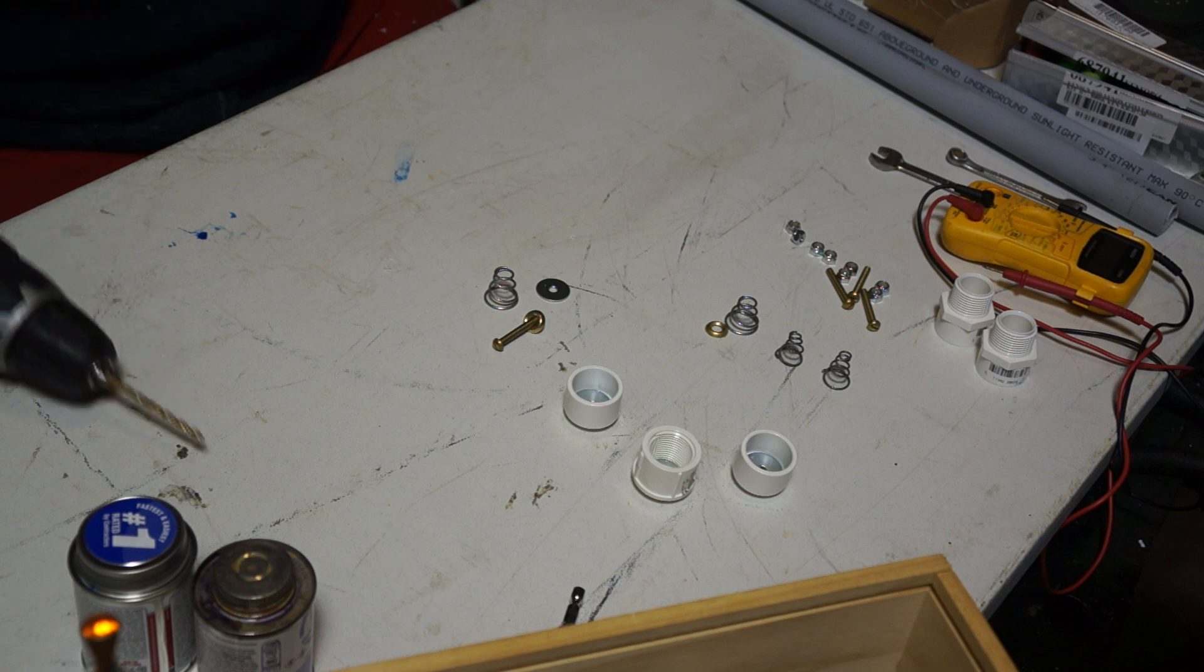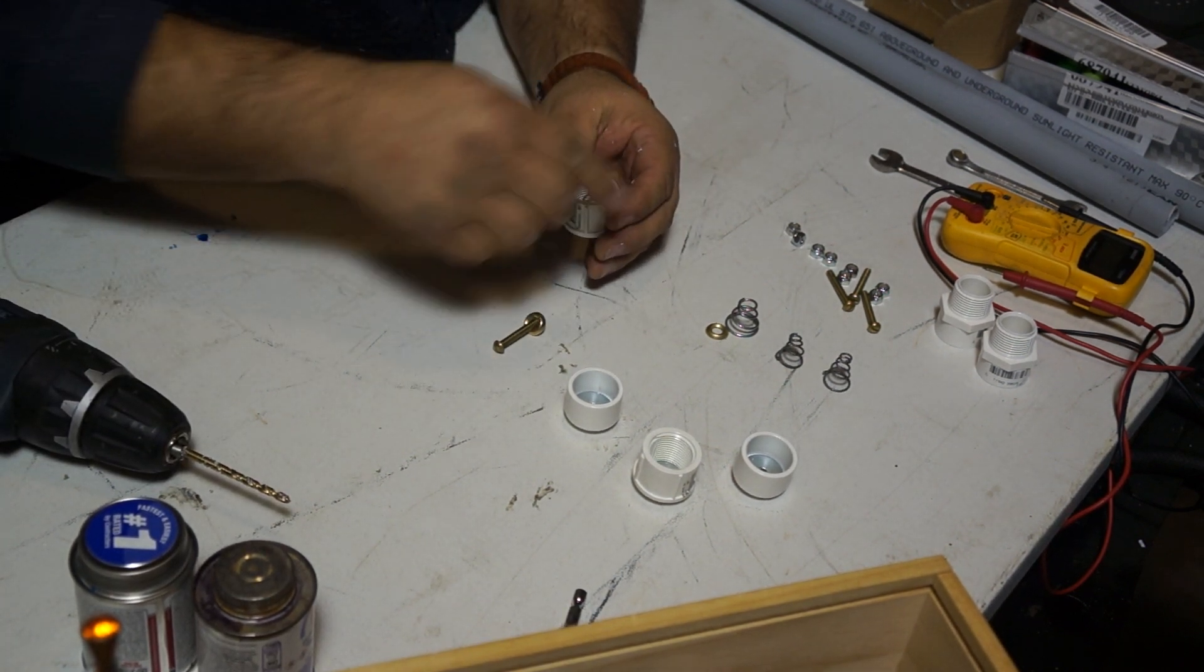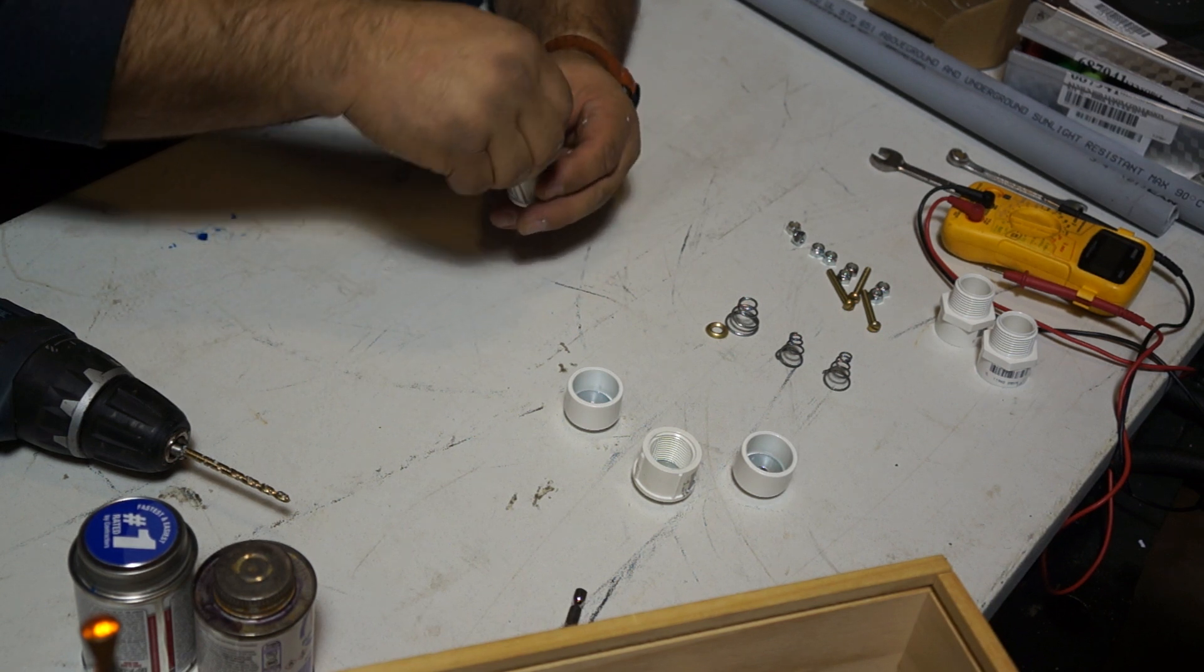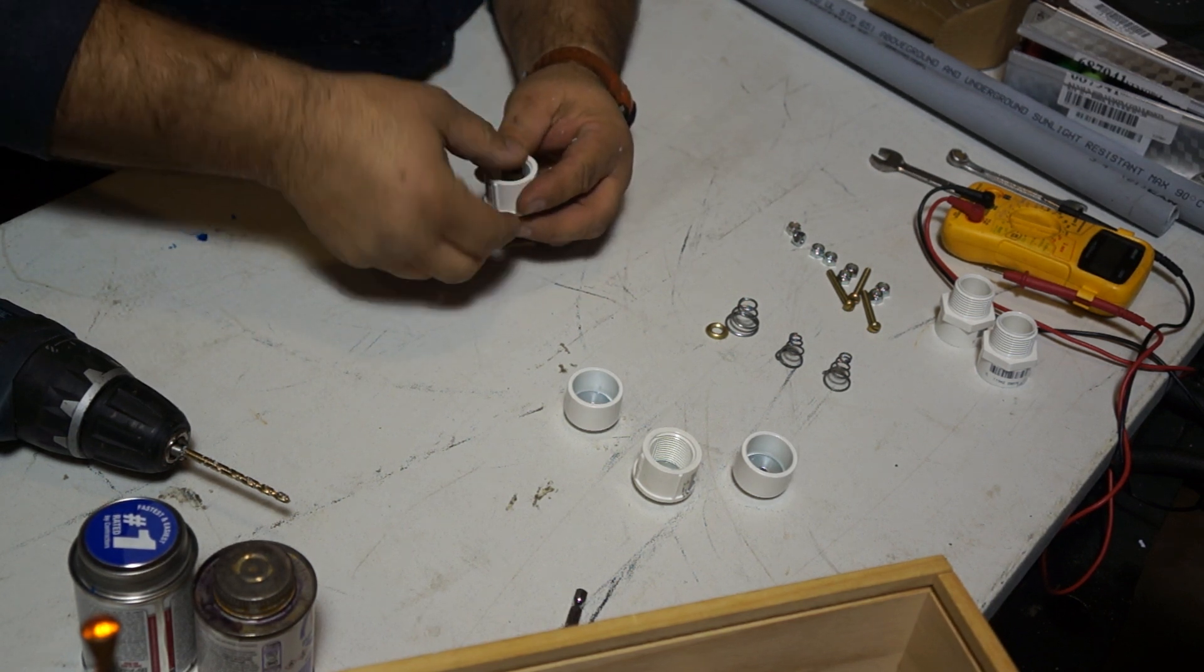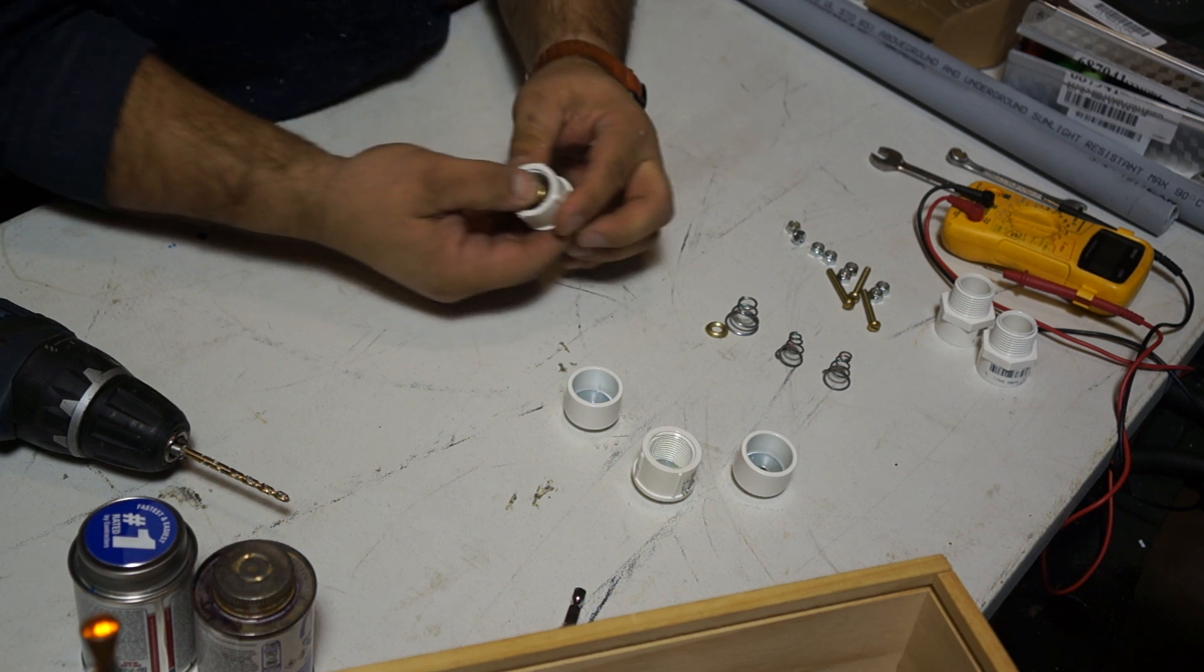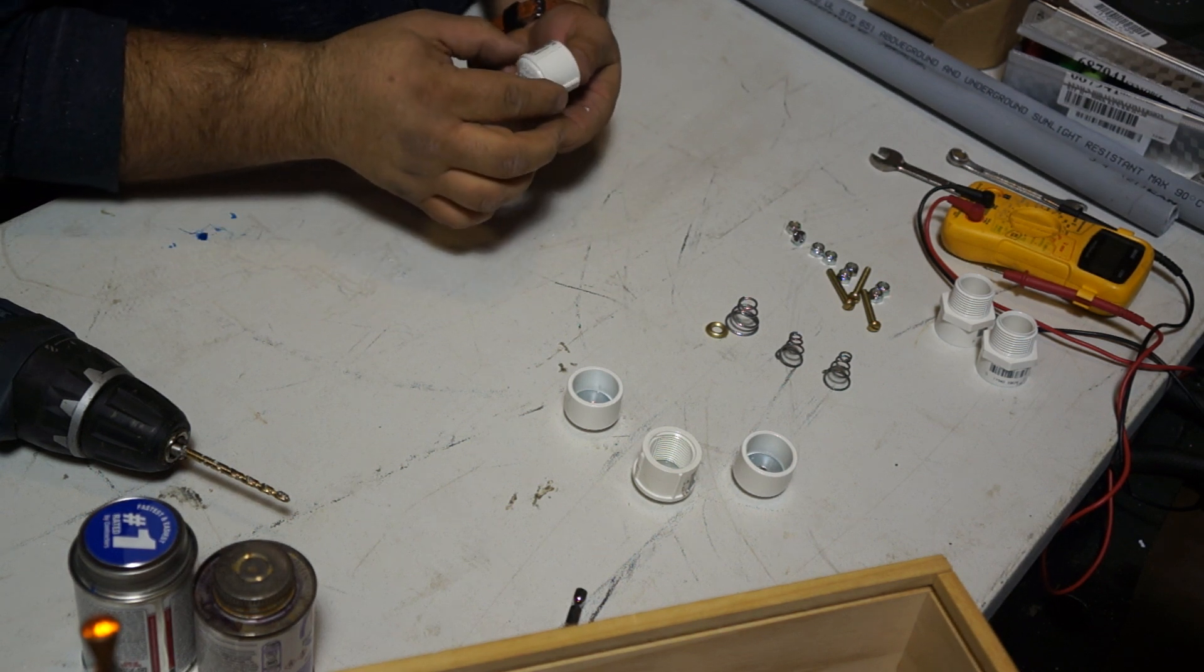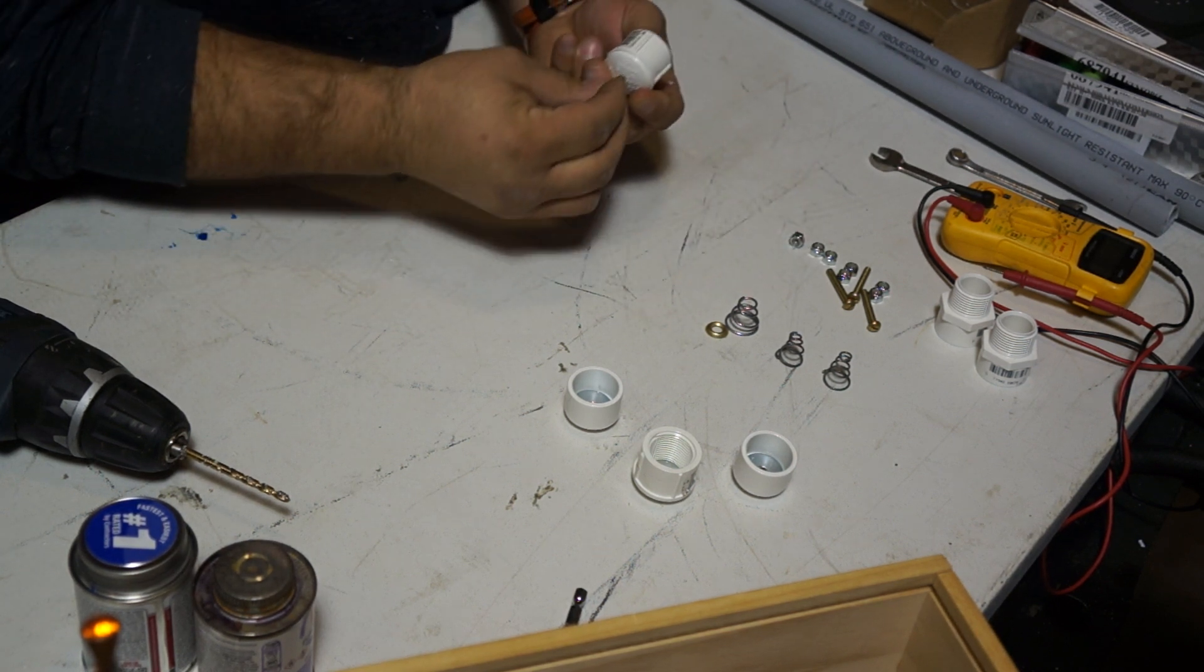You want your stuff to move freely and not bind up on you. So let's try this again. There we go. So when you press on it, you get the spring tension out the other side and go ahead and put a locking nut on it.